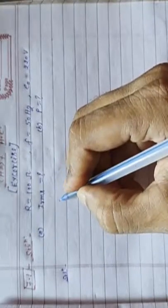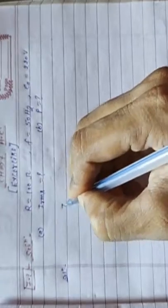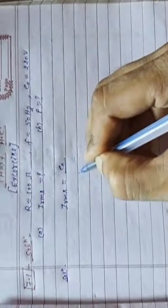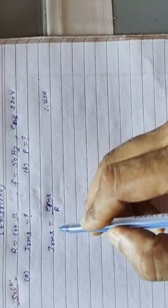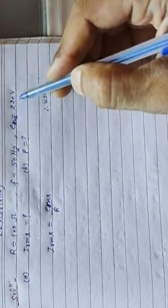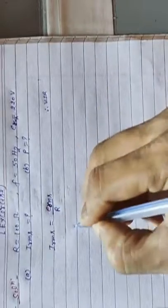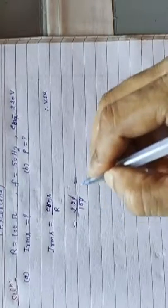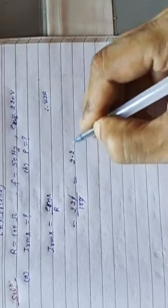We know that the formula I RMS equals E RMS upon R. This value is given, E RMS equals 220 volt. You know that V equals I R, so I equals V upon R. E RMS value is given 220 volt and value of R is given 100. We calculate it and find out 2.2 ampere.